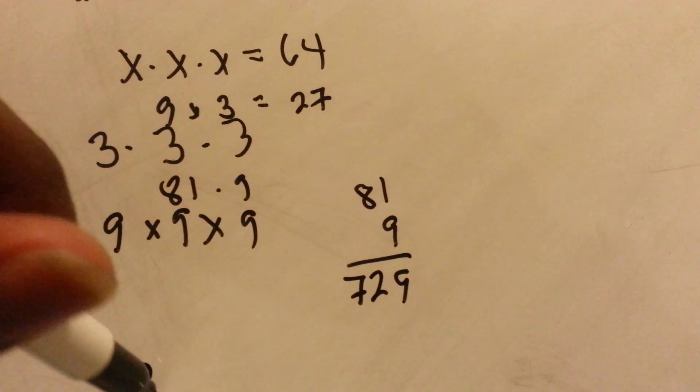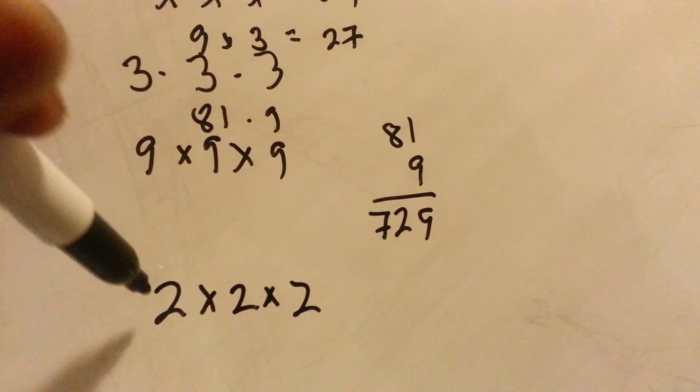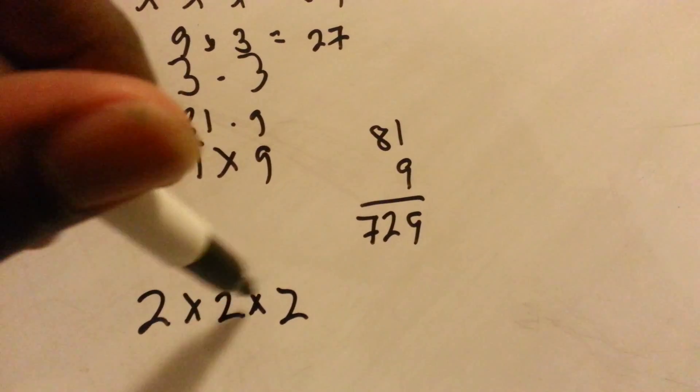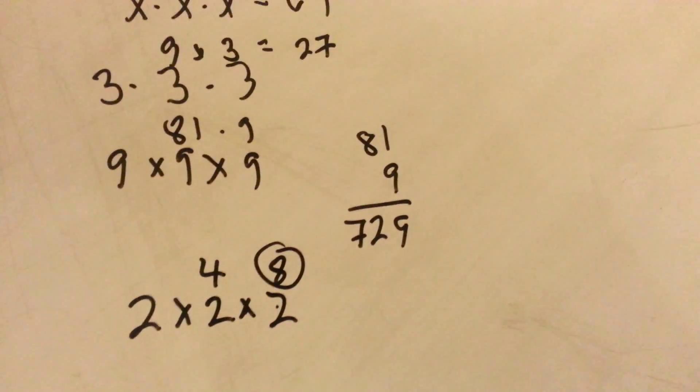We can do two. I know that's not going to be enough. Two times two is four. Four times two is eight. So eight is not enough either.